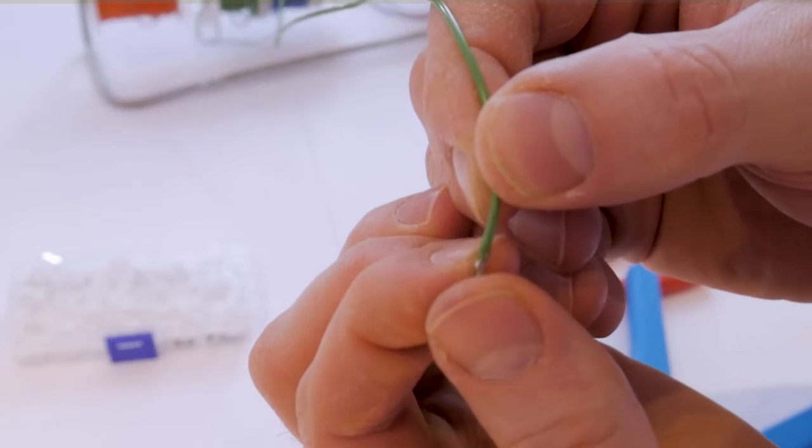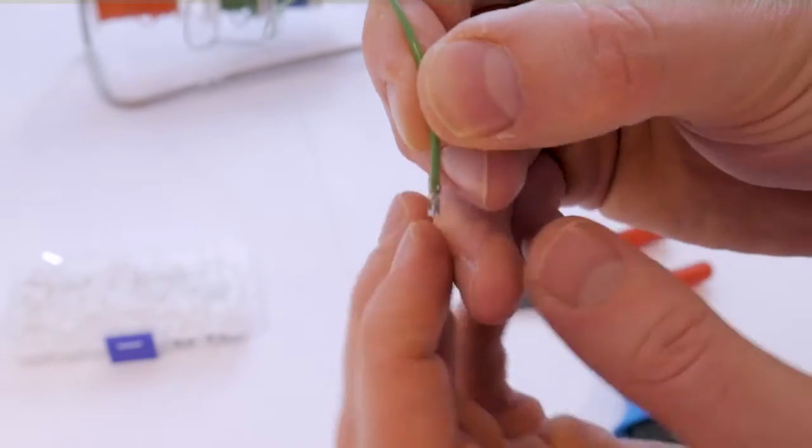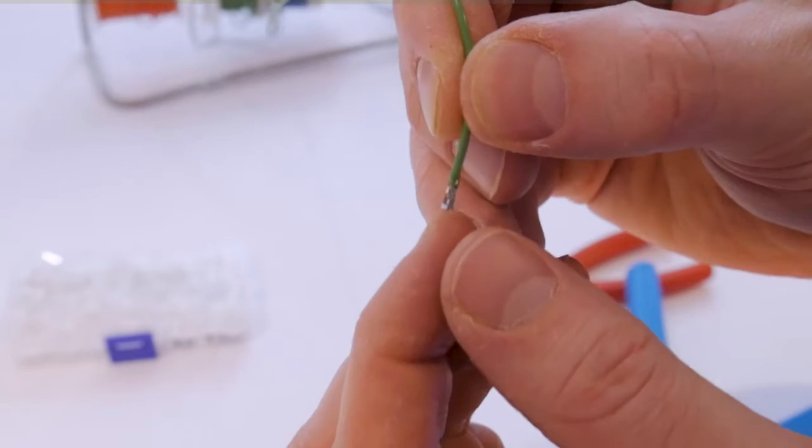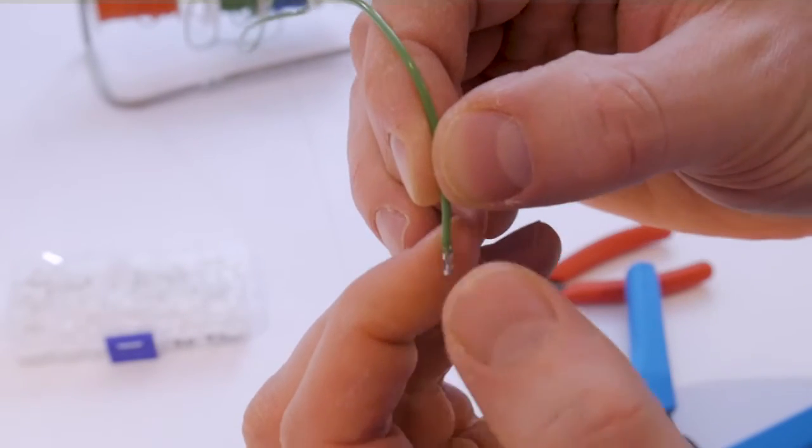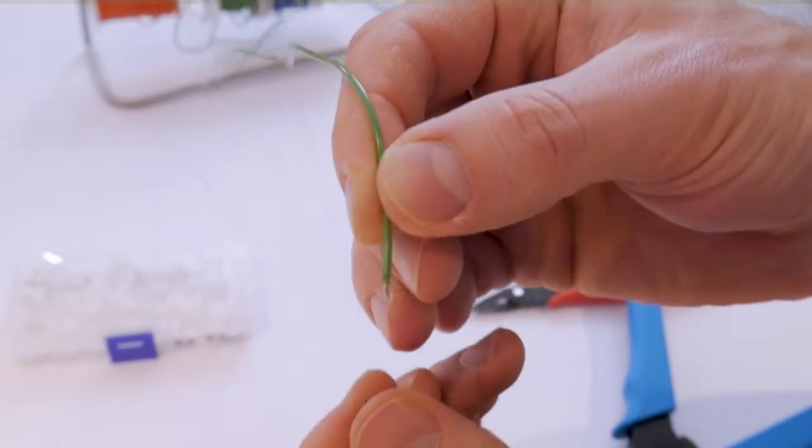And I think this is largely due to the fact that, like I had mentioned before, this tool has to crimp both the insulator section and the bare wire portion at the same time, and so this is not a one-size-fits-all solution.